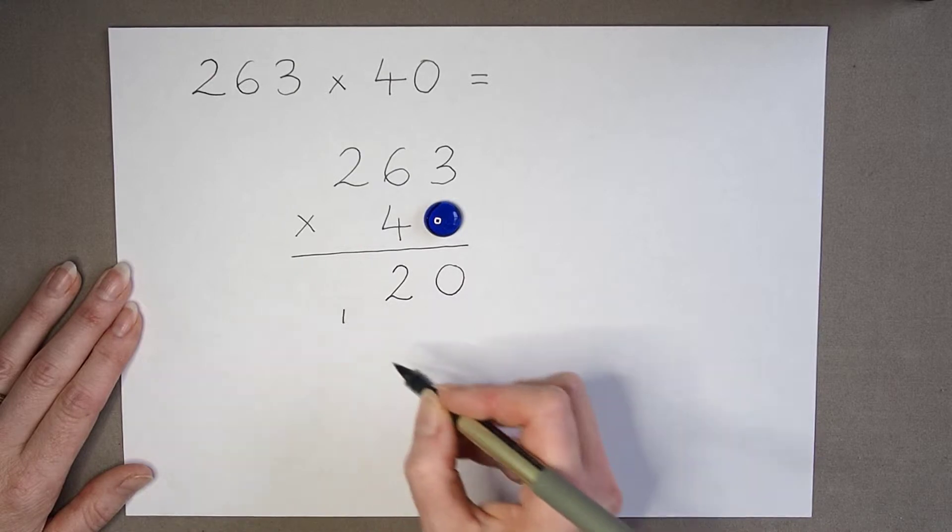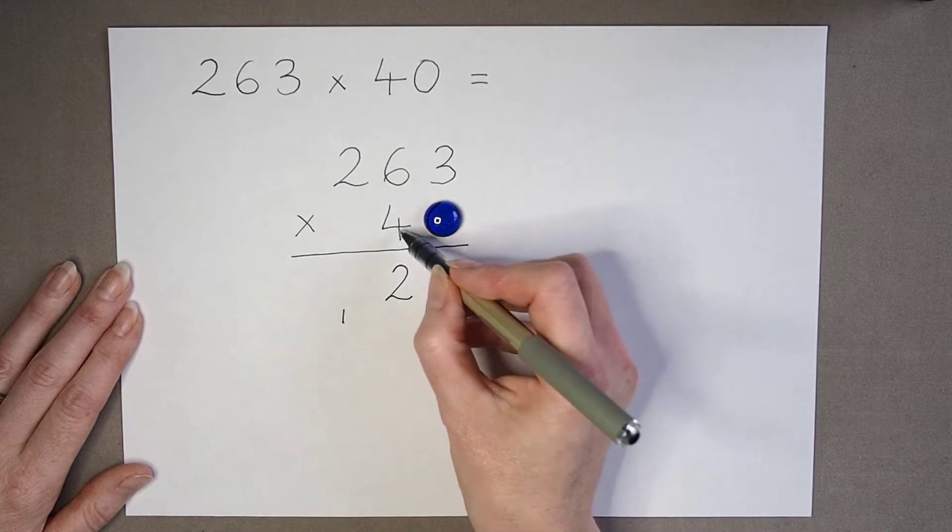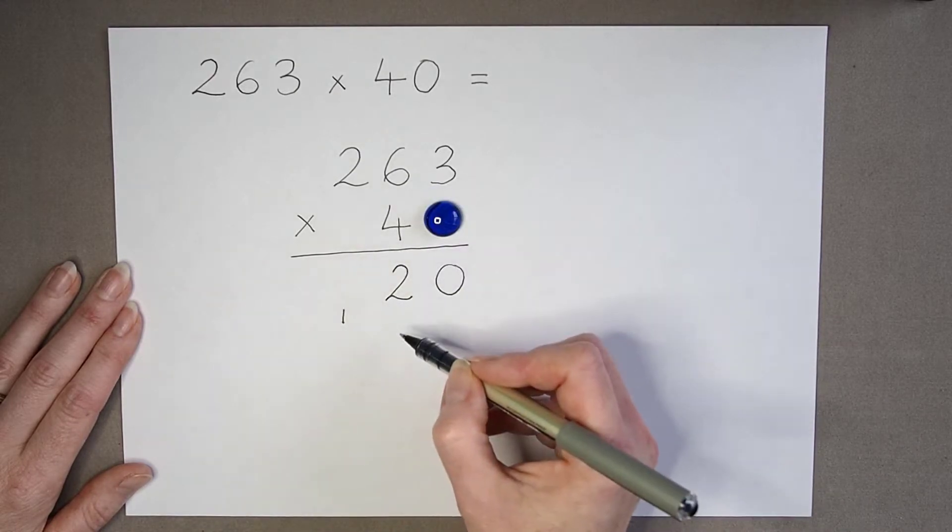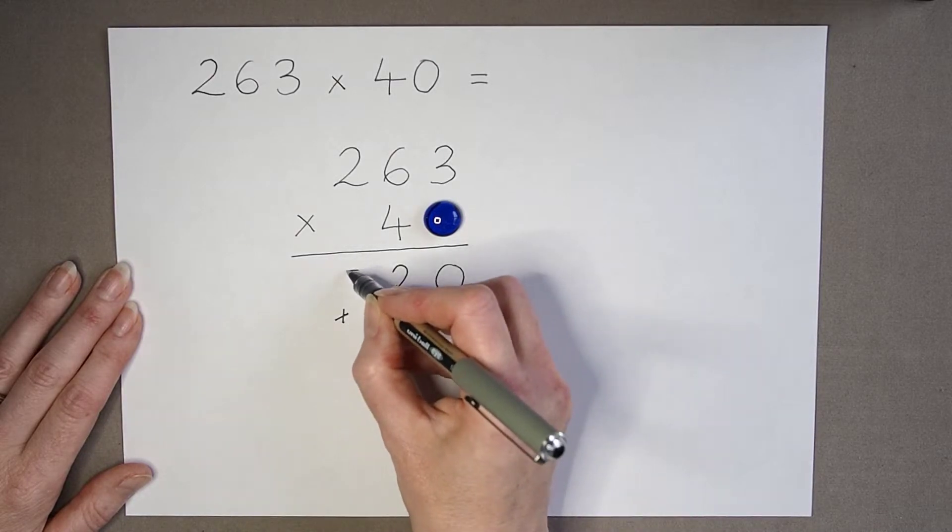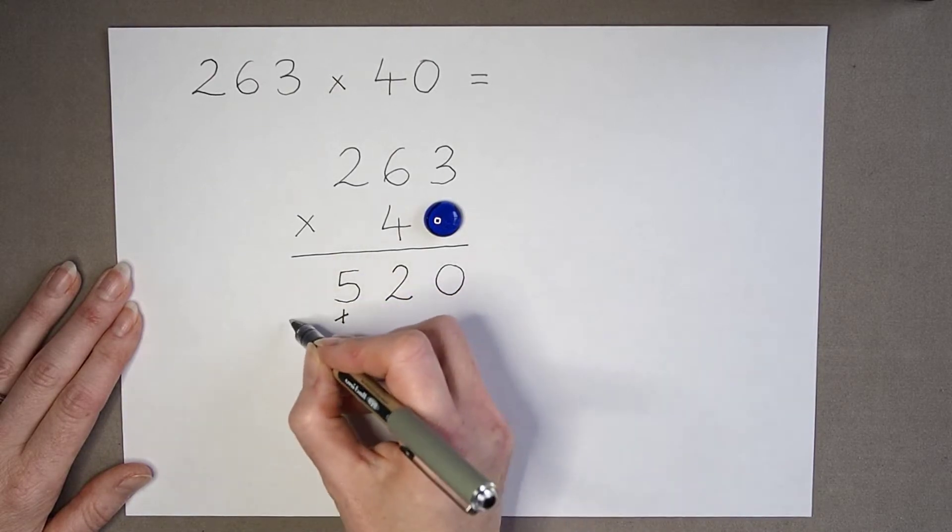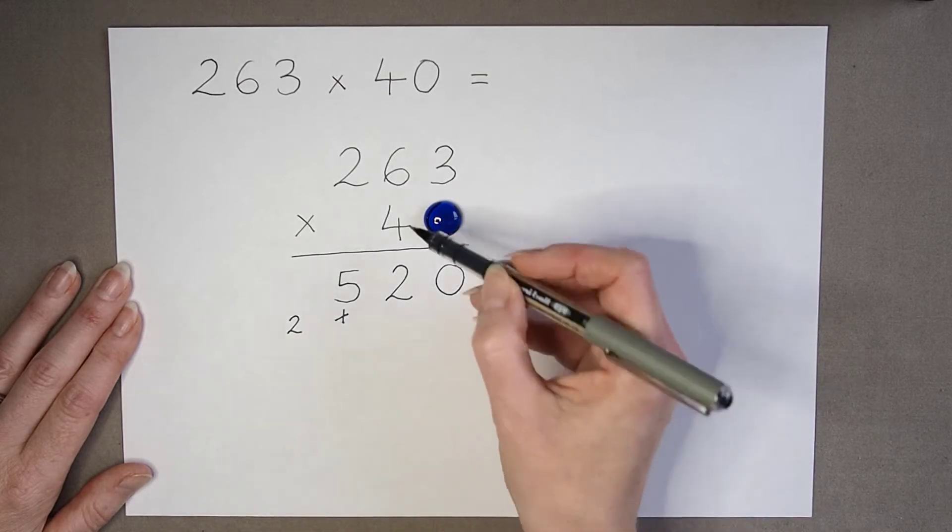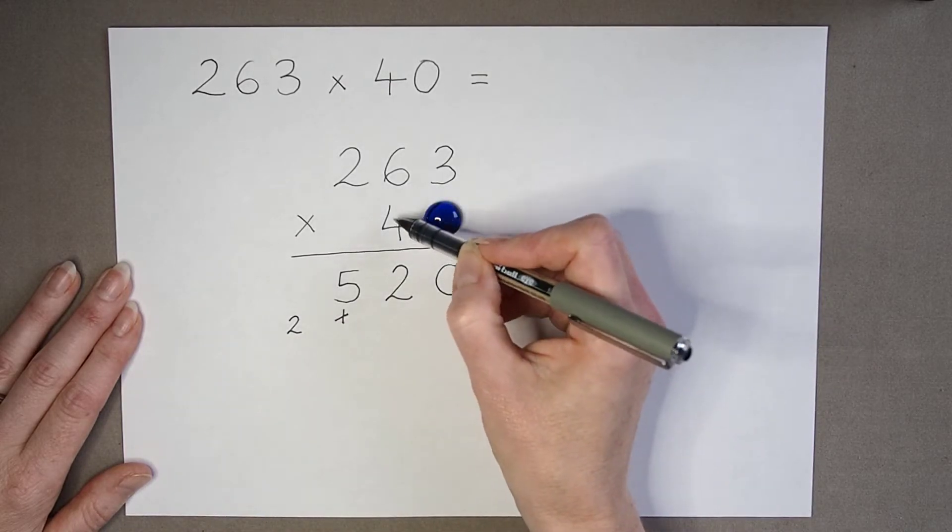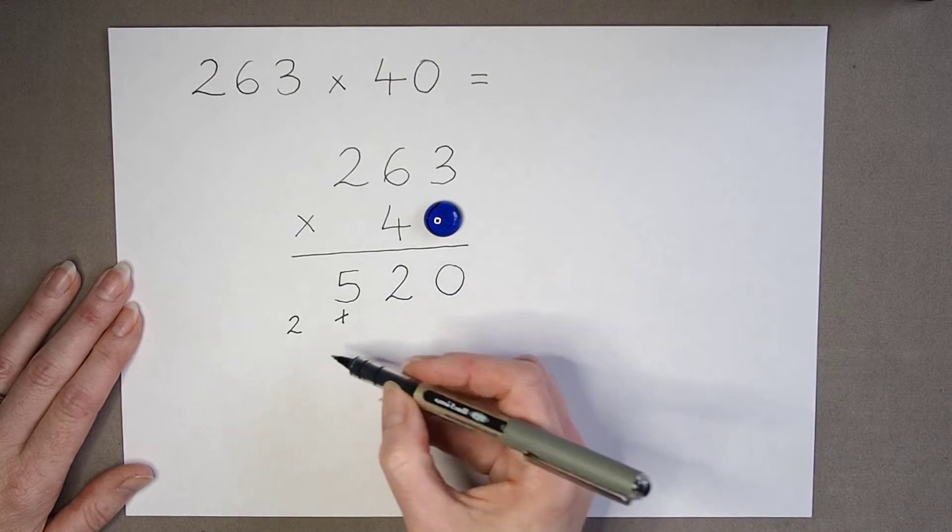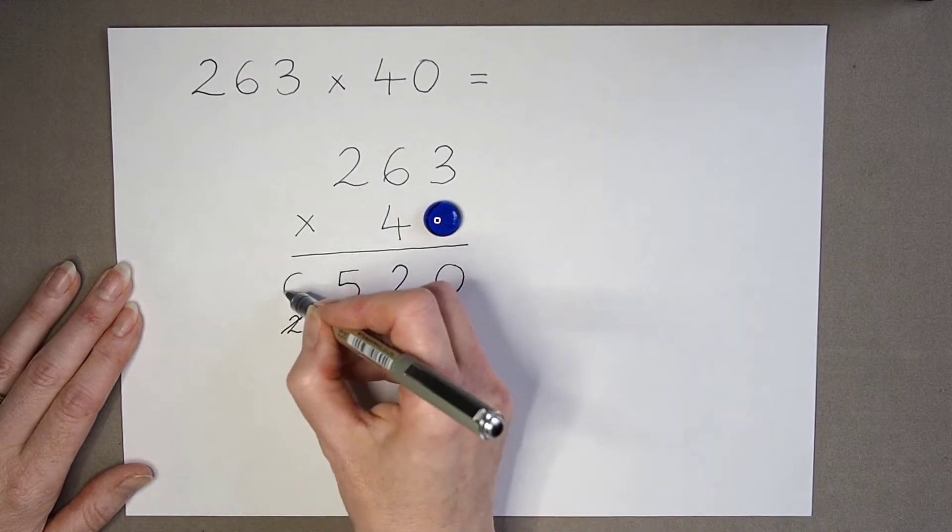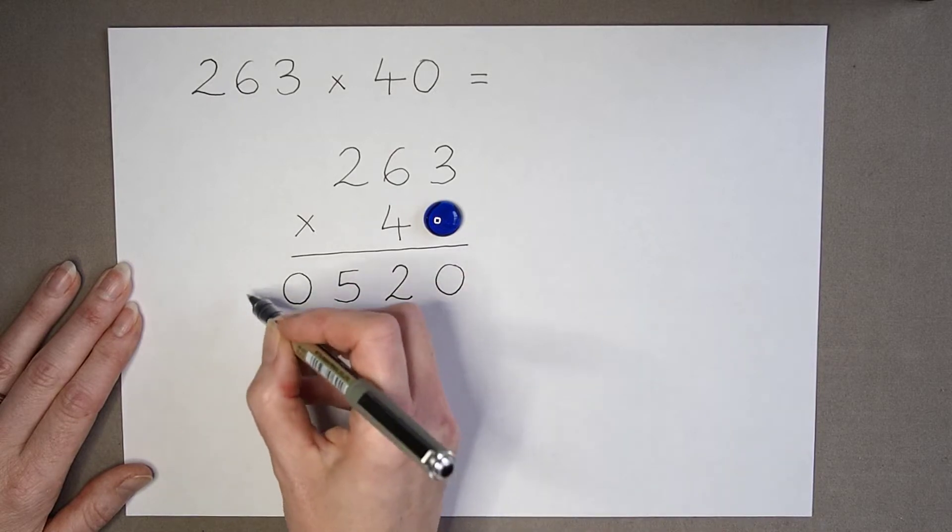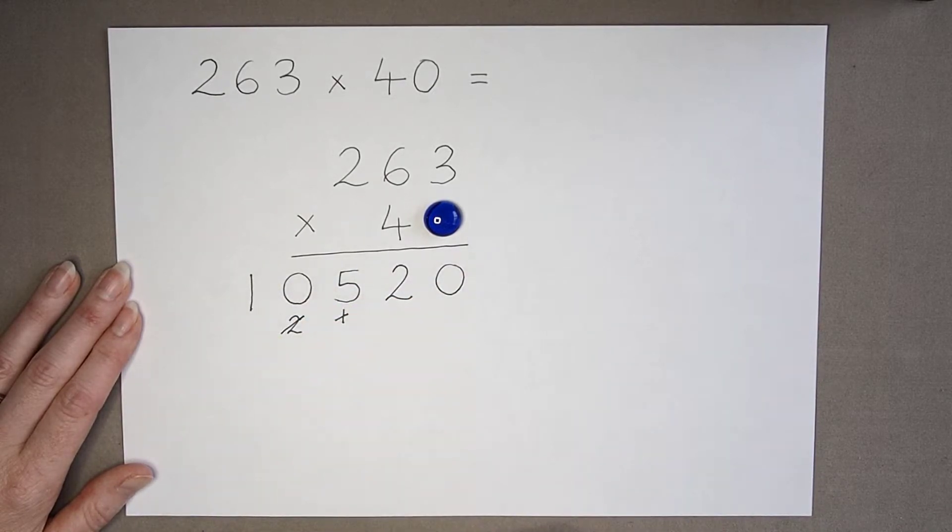4 times 6 is 24, add on 1 is 25, carry the 2. 4 times 2 is 8, add on the 2 is 10. So 0, and I finish my calculation so I can write the 1 in.